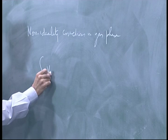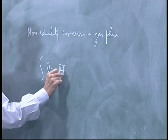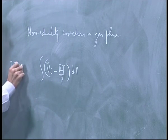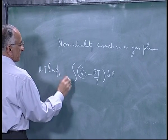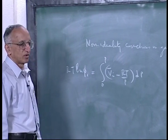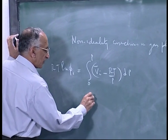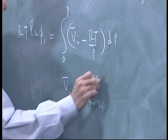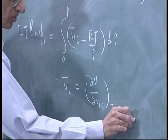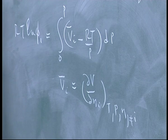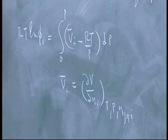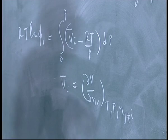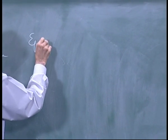Let me discuss the non-ideality part of it in gas phase. Basically all non-ideality corrections have to do with calculating this integral Vi bar minus RT by P dP. This is RT ln phi i. So all you need is Vi bar. If you look at Vi bar by definition, it is partial of V with respect to Ni holding T, P, all other mole numbers constant. So all you need is an expression for V when you have to do the differentiation.